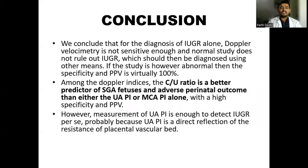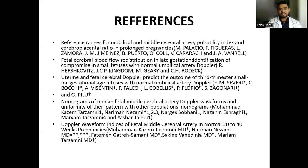In conclusion, for the diagnosis of IUGR alone, Doppler velocimetry is not sensitive enough, and a normal study does not rule out IUGR, which should then be diagnosed using other means. Among the Doppler indices, the cerebro-umbilical ratio is a better predictor for small for gestational age fetus and adverse perinatal outcome than either individual umbilical artery PI or MCA PI alone. However, measurement of umbilical artery PI is useful to detect IUGR per se, because umbilical artery PI is a direct reflection of the resistance of the fetoplacental vascular bed. Thank you.